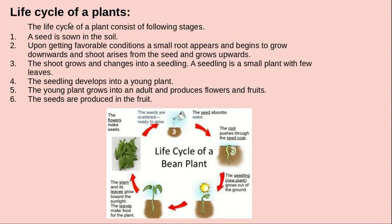Life cycle of a plant: the life cycle of a plant consists of the following stages. A seed is sown in the soil. Upon getting favorable conditions, a small root appears and begins to grow downwards, and a shoot arises from the seed and grows upwards. The shoot grows and changes into a seedling.